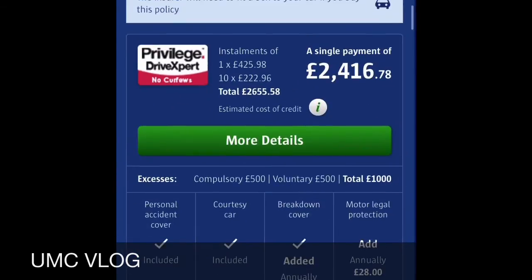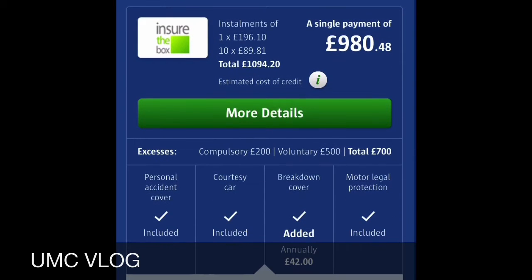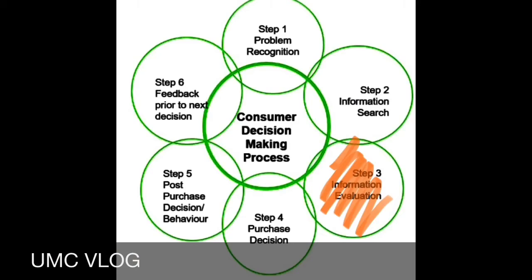Step three was the information evaluation. After typing in all my details, the website provided me with thousands of different quotes. As a student, price and safety were the two main factors affecting my decision. Therefore, I filtered them by ascending price and picked the top 10 to analyse. I read all the reviews and information provided to determine which insurance company would best suit me, my car, and my lifestyle.